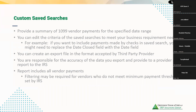The safe searches are customizable — they provide a summary of the 1099 vendor payments for a specific date range, typically the fiscal year, and you have the ability to adjust that. You can edit the criteria as well as the search results to meet your business requirements. For example, if you wanted to include payments made by check, you could replace the date close field with the date field. There are step-by-step instructions for updating those safe searches for the information that you need.